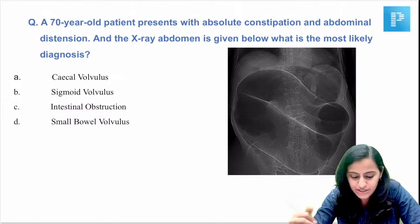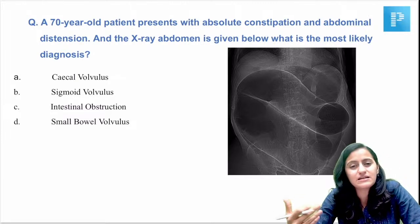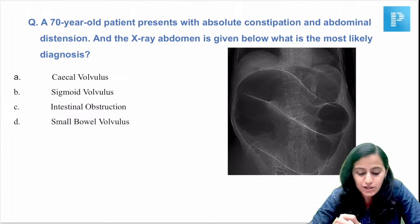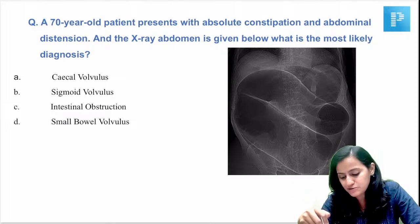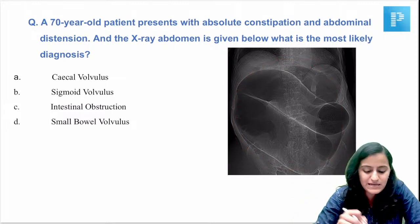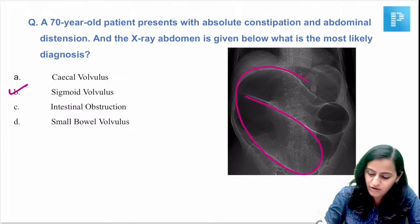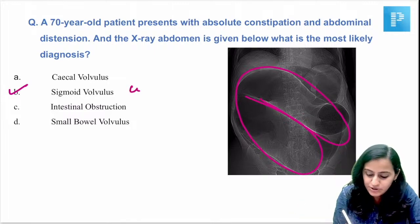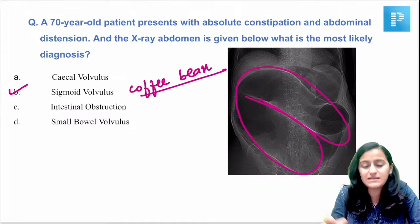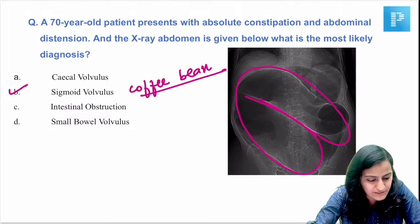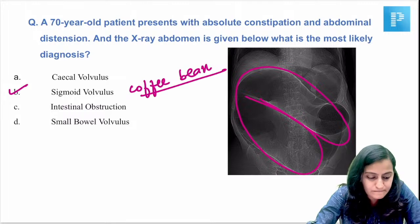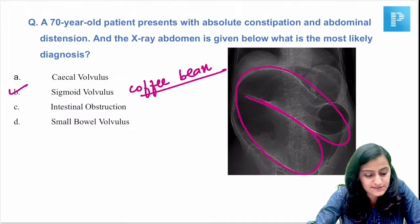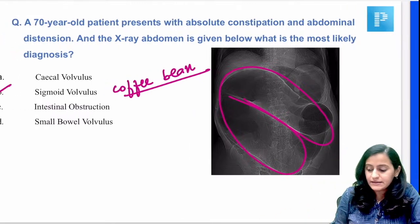Moving to the next question: a 70-year-old patient — the image itself is a giveaway even without reading the question. The first thing you should do with an image-based question is look at the image, because if it is a spot diagnosis, you can directly identify it. This is sigmoid volvulus with the coffee bean sign visible in the image.